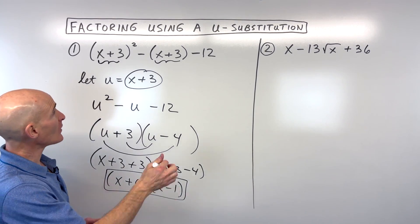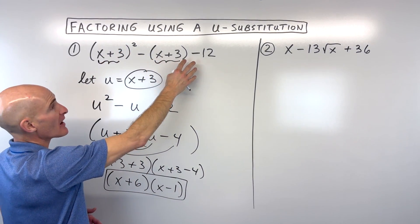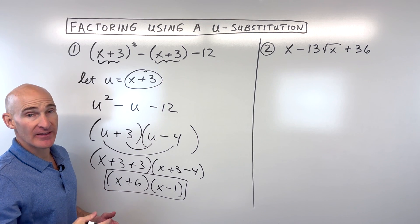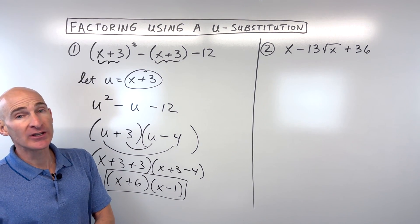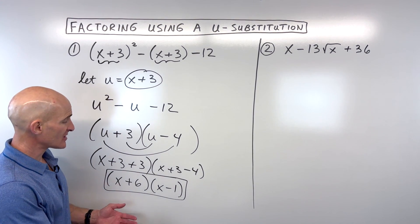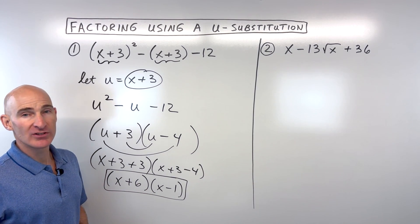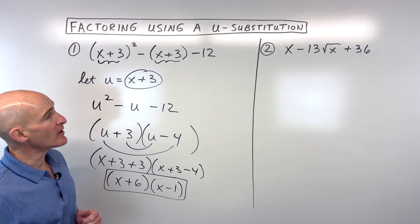Now you might be saying, Mario, couldn't I just foil this out and combine like terms and rewrite it and then factor it? You certainly could. It just might take a little bit longer. So this is kind of a little shortcut technique, and just another way to do it. So let's look at number 2 now.